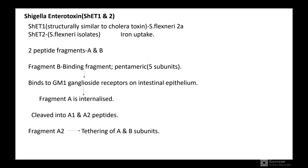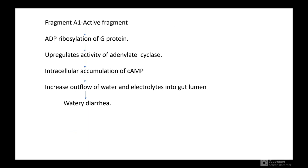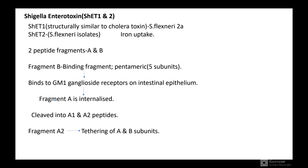Shigella enterotoxin 1 is structurally similar to cholera toxin (from S. flexneri 2A). Shigella enterotoxin type 2 is from Shigella flexneri isolates and results in iron uptake. It has two peptide fragments. Fragment B is the pentameric binding fragment with 5 subunits binding to GM1 ganglioside receptor on intestinal epithelium. Fragment A1 is the active fragment causing ADP-ribosylation of G protein, upregulating adenylate cyclase, increasing cyclic AMP, and causing watery diarrhea — similar to cholera toxin.